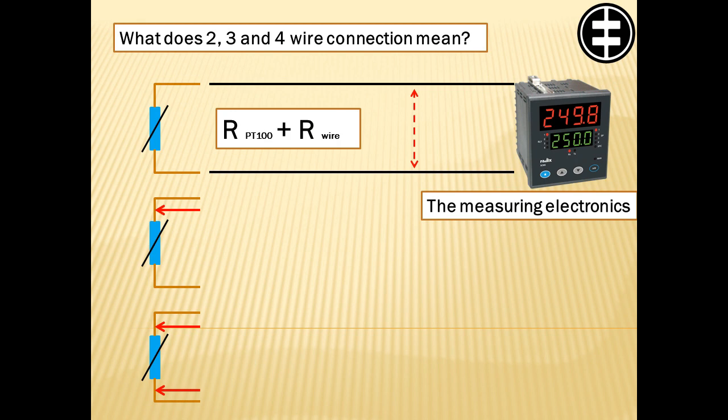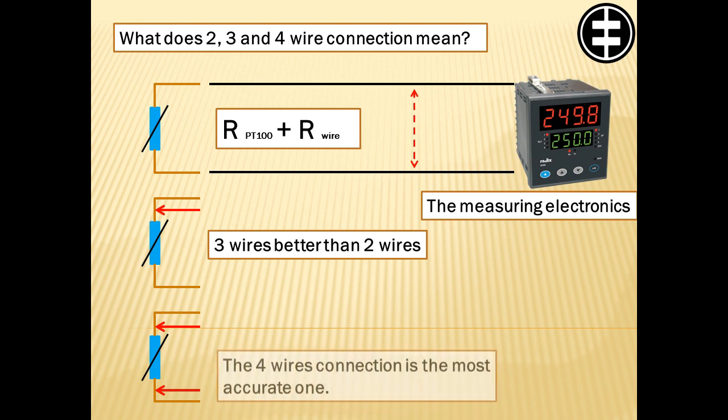Using extra wires for compensating the cable resistance gives more precisely the desired resistance of the RTD itself. The 4 wires connection is the most accurate one.